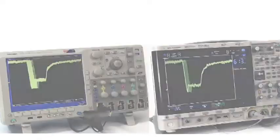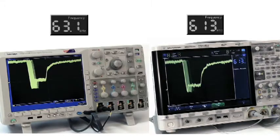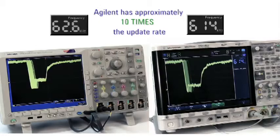Next, let's look at the importance of update rate. We've connected the trigger outport of each scope to a frequency counter. You can see Agilent is updating at 613,000 waveform updates per second. Tektronix is updating at 63,000 waveform updates per second.